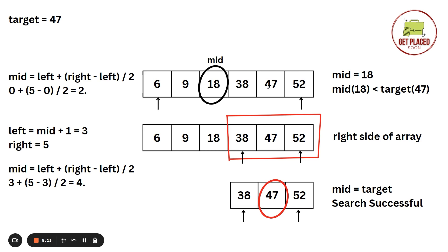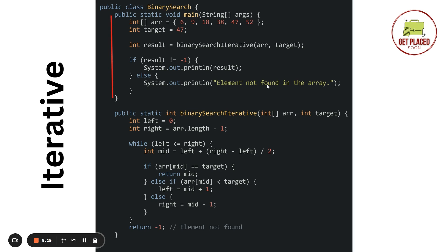Now let's see how to do this in programming. I'll cover two approaches: iterative and recursive. In the iterative approach, in the main function we create a sorted integer array in increasing order, and an integer variable target assigned the value to search. Our job is to determine if this value is present in the array — if present, return the index; if not, print element not found. We pass the array and target to the binary search iterative function and store the result.